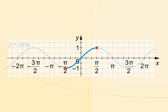The domain will be restricted to the closed interval from negative pi over 2 to pi over 2. The red part is the graph of sine of x in the closed interval from negative pi over 2 to pi over 2.